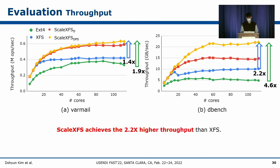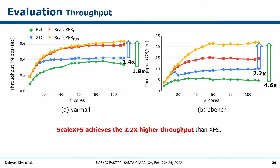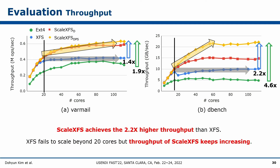The graphs show throughput with varying core counts. The left graph is BarMail from FireBench and the right is the client workload of DBench; x-axis is number of cores, y-axis is throughput, higher is better. In DBench, ScaleXFS throughput is 2.2 times higher than XFS and 4.6 times higher than EXT4. In BarMail, throughput is 1.4 times higher than XFS and 1.9 times higher than EXT4. Furthermore, after 20 cores XFS fails to scale, while ScaleXFS continues scaling as core count increases.